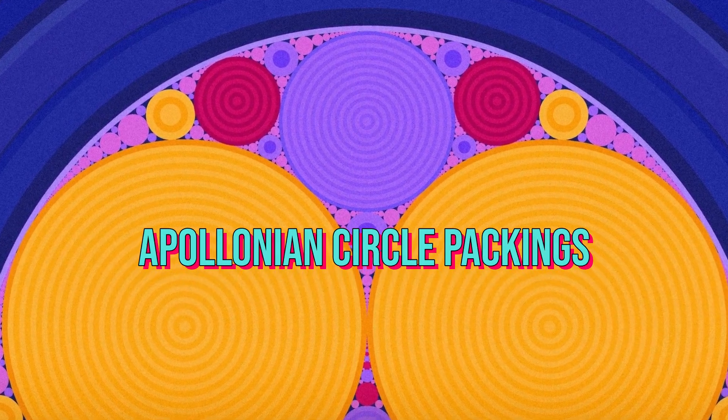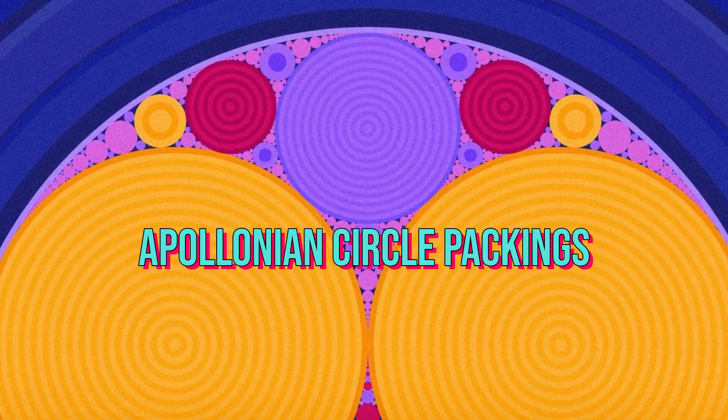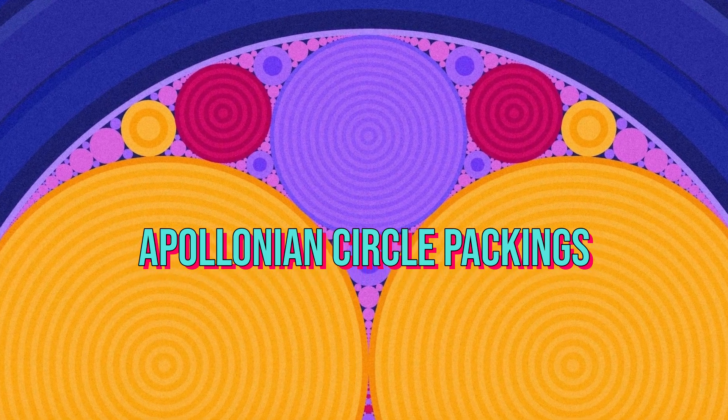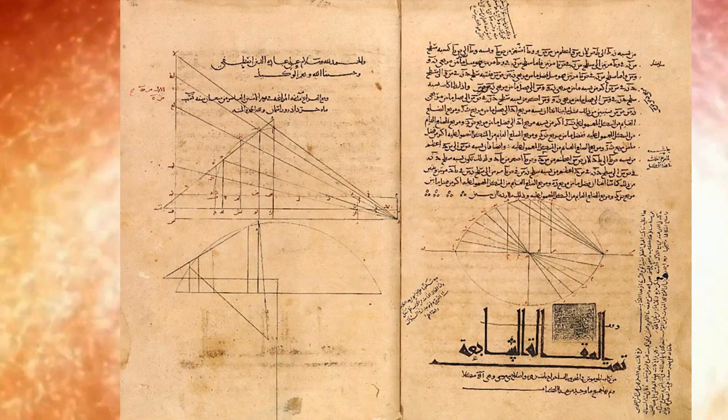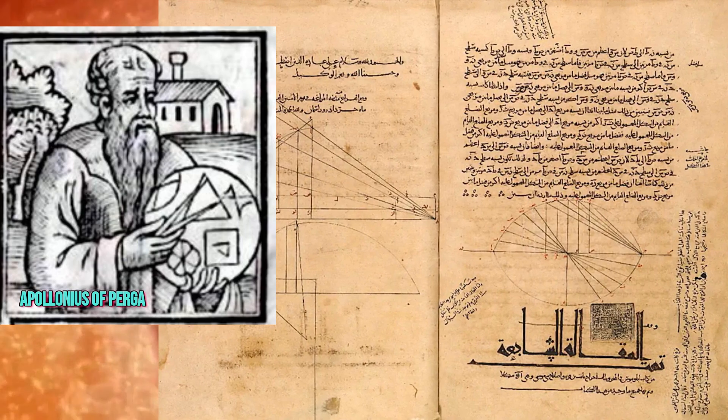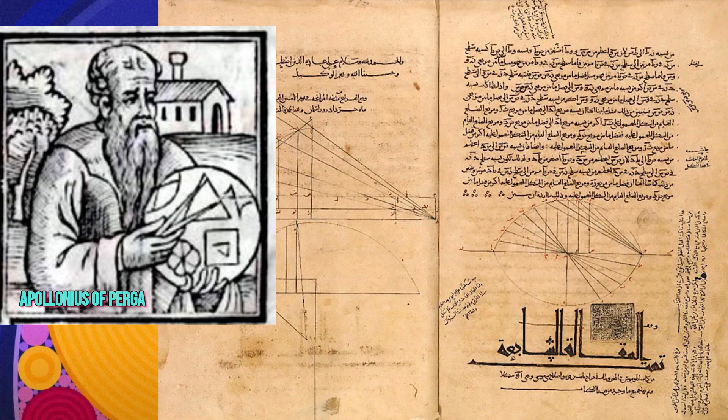Apollonian circle packing is a captivating mathematical concept that explores the harmonious arrangement of circles within larger ones. About 2,200 years ago, the Greek geometer Apollonius of Persia posed the question of how circles can be arranged when they touch each other at a point.